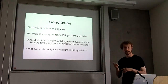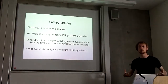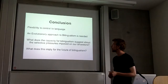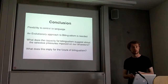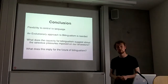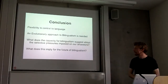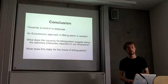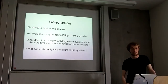To conclude, flexibility is a central aspect of language, and children also appear to be very good at handling several languages at once or several social situations. In that case, I think bilingualism should be a more central part of language evolution, and an evolutionary approach should be taken to bilingualism as well. My two research questions: what does the capacity for bilingualism suggest about the selective pressures imposed on our ancestors, and what does this imply for the future of bilingualism? Are we destined to all speak the same language, or is bilingualism a fundamental aspect of language?